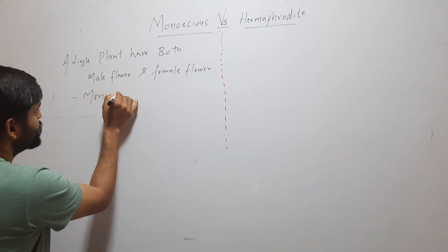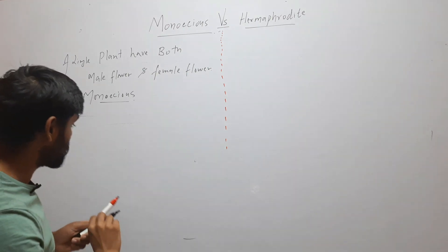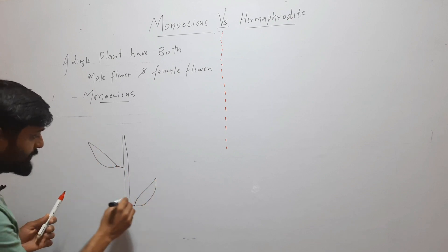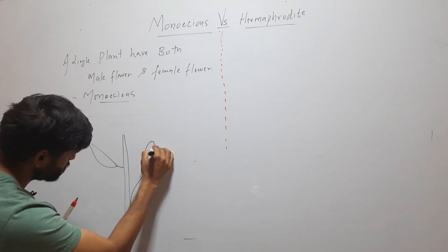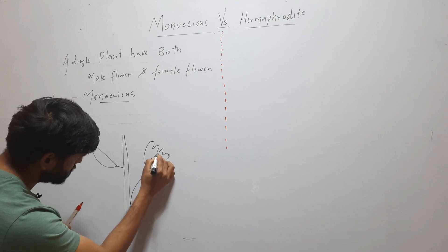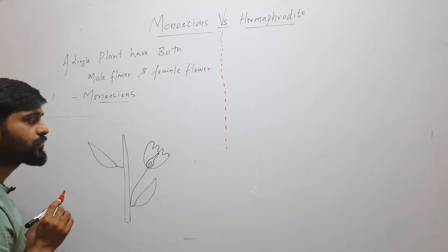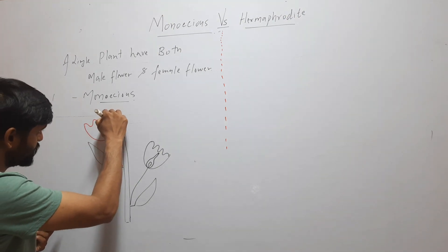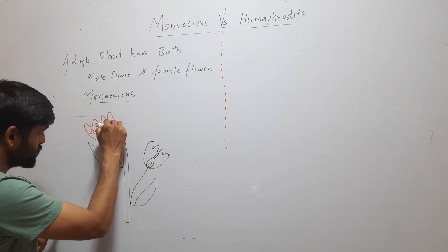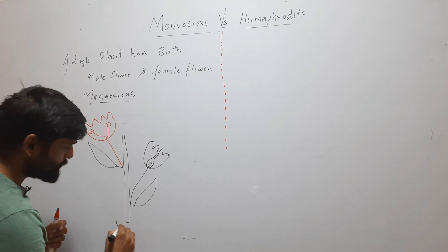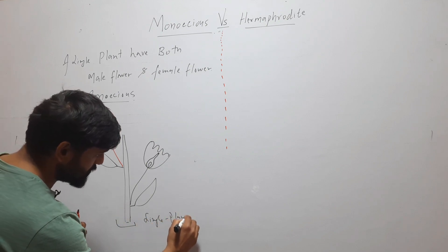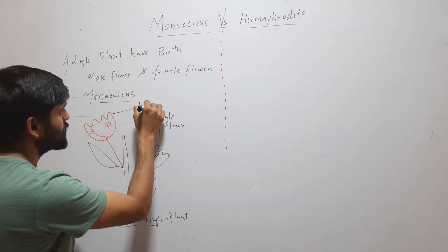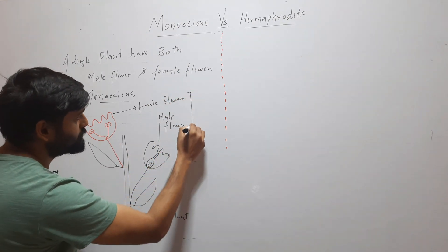Let's understand this with this diagram. Suppose this is a plant, and this plant has a female flower, and that same plant also has a male flower. So here you can see that this single plant has both male flower and female flower — this condition is called monoecious.